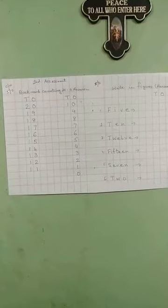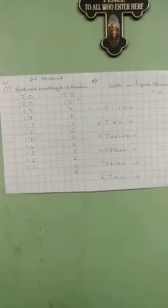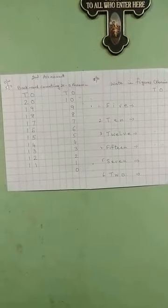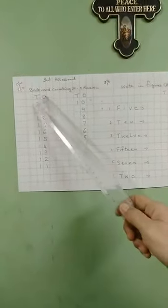Upper nursery children, y'all have been taught backward counting and write in figures in class. I am just repeating the same. Backward counting, 20 to 0. This is revision.